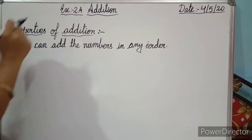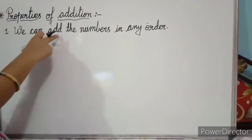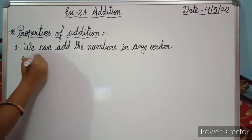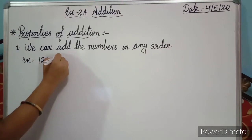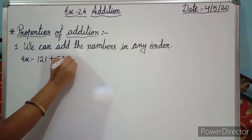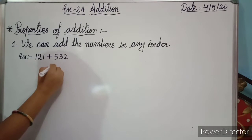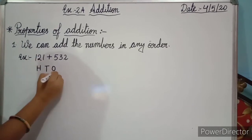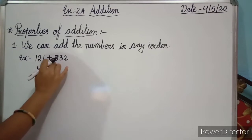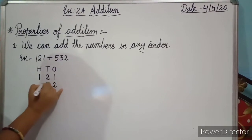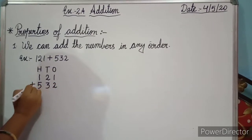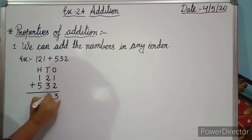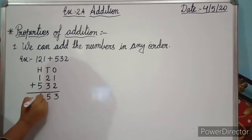Now we start the properties of addition. Our first property is: we can add the numbers in any order. For example, 1, 2, 1 plus 5, 3, 2. We can write the numbers as ones, tens, hundreds. First we put the number 1, 2, 1. Second we put the number 2, 3, and 5. Then we add: 2 plus 1 is 3, 3 plus 2 is 5, and 5 plus 1 is 6.